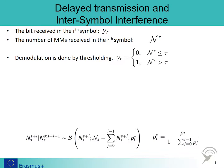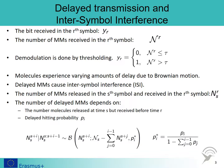At the receiver node, demodulation is done by thresholding. We denote the bit received at symbol R as Y sub R and the number of molecules received in that symbol as calligraphic N sub R. Many molecules experience varying amounts of delay due to Brownian motion. These delayed molecules cause inter-symbol interference in the channel, in short, ISI.